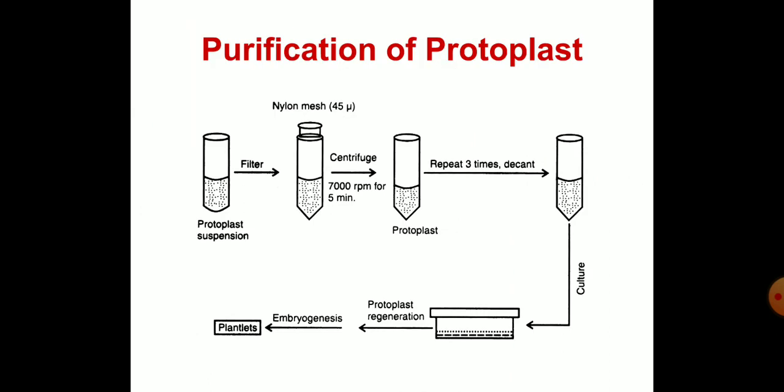Purification of protoplasts: the enzyme-digested plant cells, besides protoplasts, contain undigested cells, broken protoplasts and undigested tissues. Cell clumps and undigested tissues can be removed by filtration. This is followed by centrifugation and washing of the protoplasts. After centrifugation, the protoplasts are recovered above Percoll.